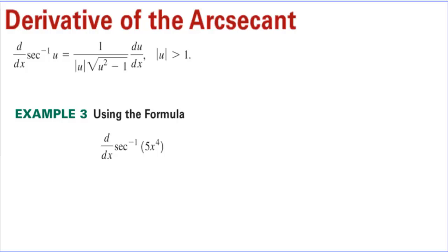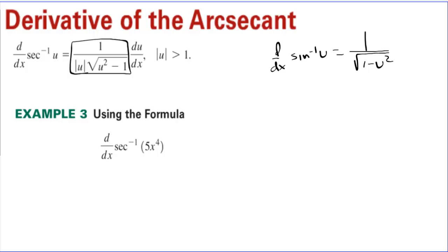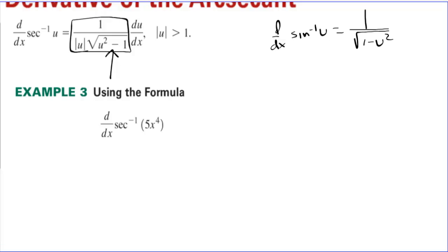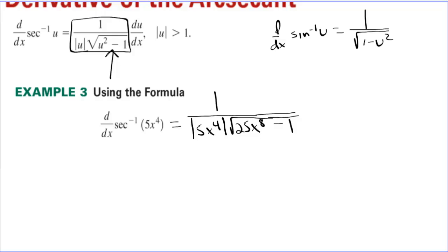Derivative of the arc secant. We're not deriving this one — inverse secant is 1 over the absolute value of u times square root of u squared minus 1. Compare that to inverse sine: 1 over square root of 1 minus u squared. For arc secant, we have the terms reversed and the absolute value of u on the outside of the radical. For example, the derivative of inverse secant of 5x to the 4th is 1 over the absolute value of 5x to the 4th times square root of 25x to the 8th minus 1, times 20x to the 3rd. This simplifies to 4 over absolute value of x times square root of 25x to the 8th minus 1, since 20x cubed and 5x to the 4th cancel.